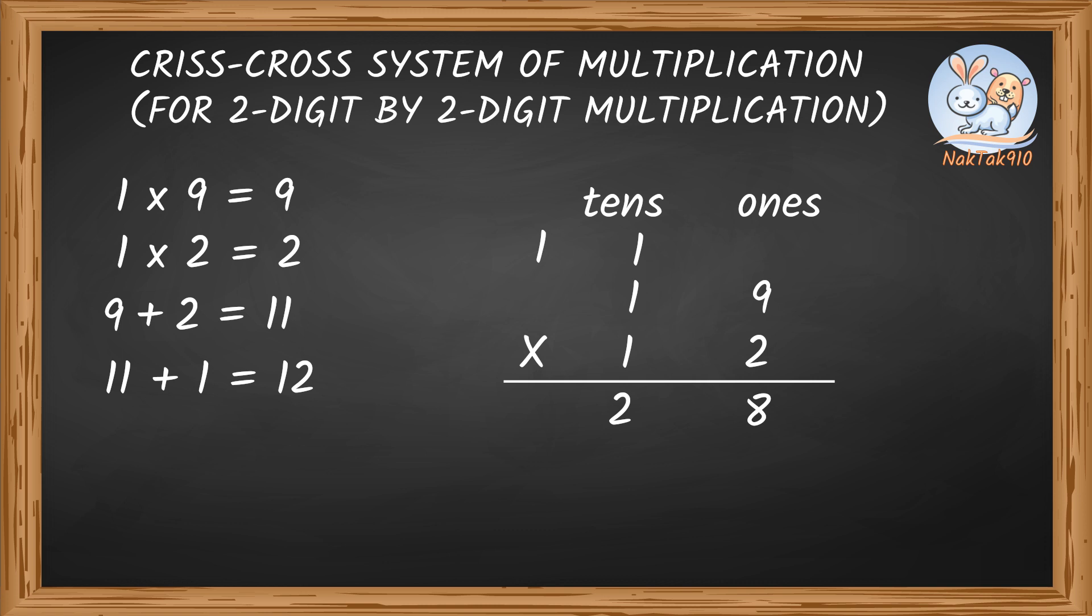Final step is to multiply the digits in the 10's place of both the numbers. 1 times 1 is 1. But we have a carry in the previous step, which is 1. Which is 1 plus 1 equals 2. Write this 2 in the 100's place of our answer. Our final answer is 19 times 12, 228.